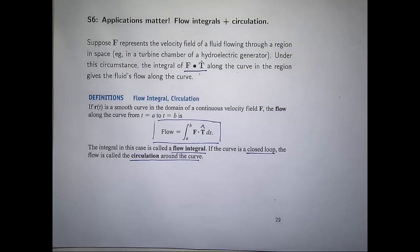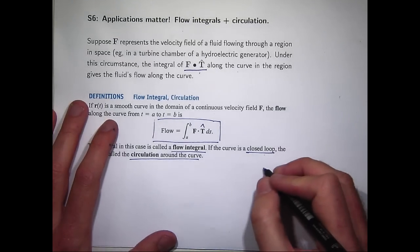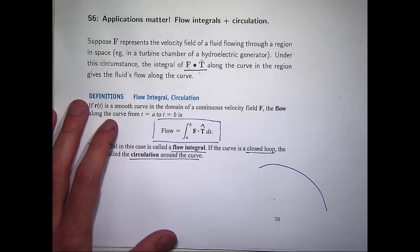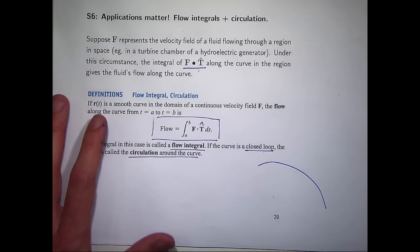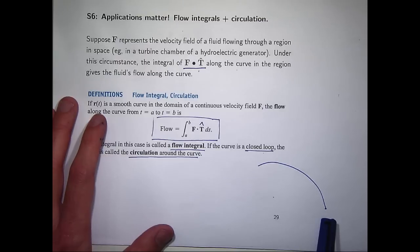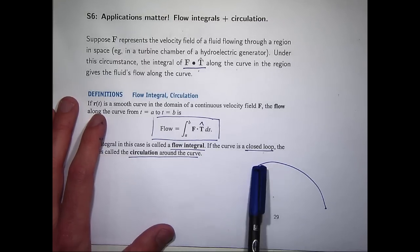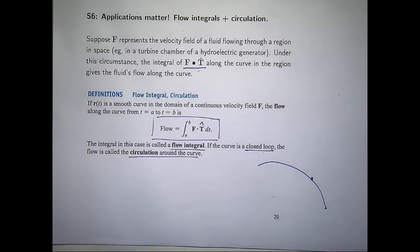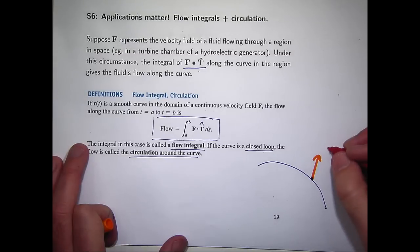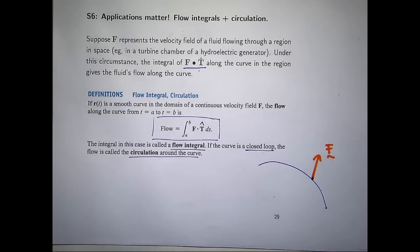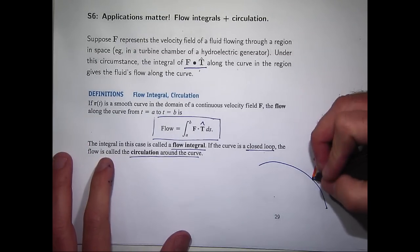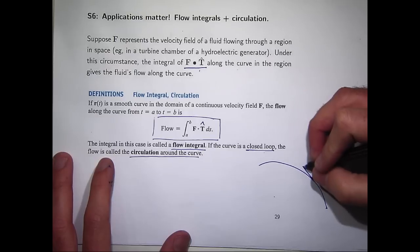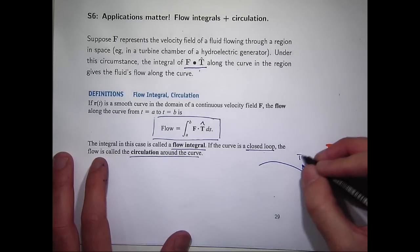Before we actually do a problem, let me give you a little bit more insight into what's going on here. You've got a smooth curve and let's say we want to integrate from here over to here in this direction. Let's choose a point on the curve and that might be your F at that particular point. Once I've oriented my curve I can draw in a unit tangent vector in the forward direction.